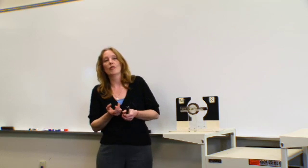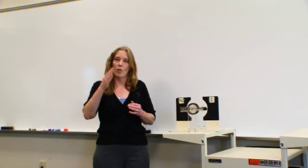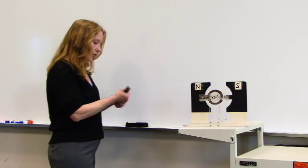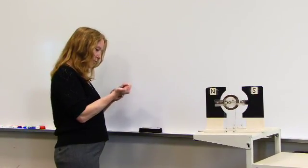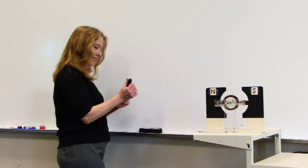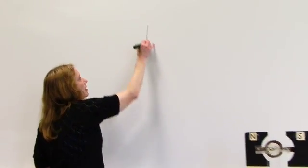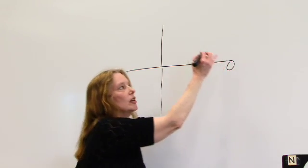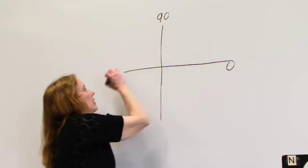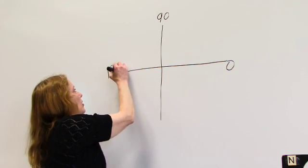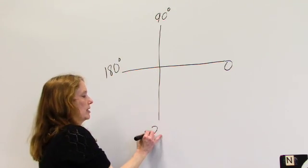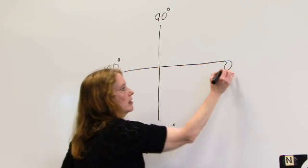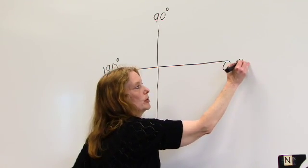Alternating current, or AC, is the fact that we have one waveform that's going to be in a positive direction, and then it's going to alternate into a negative direction. How it all works is you actually have a trig triangle here. Based on trig, we have 0 degrees, 90 degrees, 180 degrees, 270 degrees, and back up to 0 or 360 degrees.